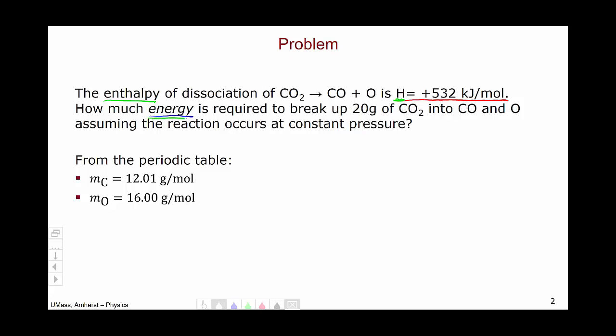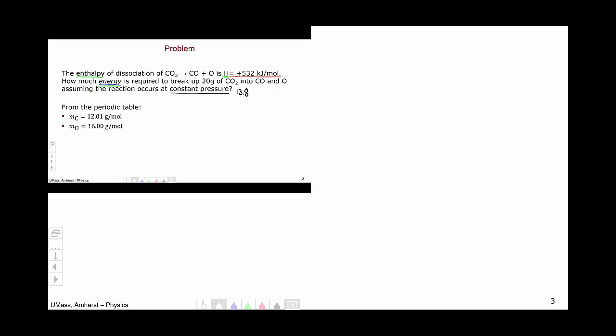So we'll begin by reviewing the connection between enthalpy and energy at constant pressure, which was first introduced in section 13.8. So we know the definition of enthalpy. It is the internal energy plus the pressure times the volume. And at constant pressure, the change in enthalpy, delta H, will be the change in energy plus the pressure, which is constant, times the change in volume.